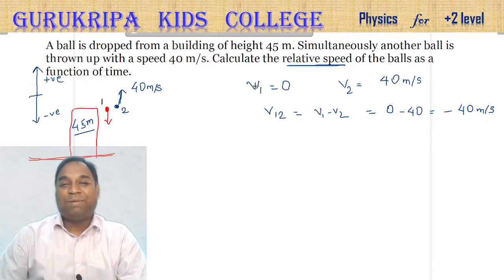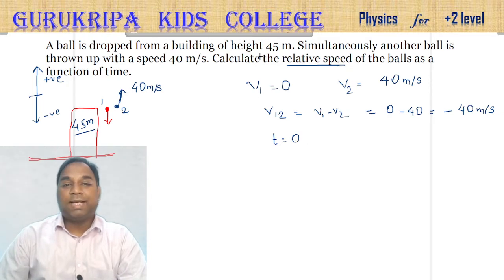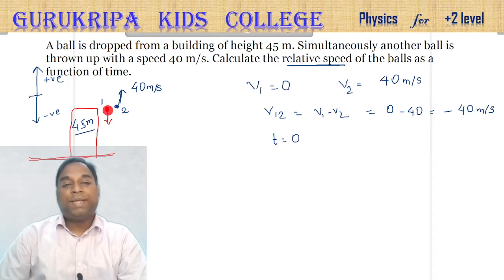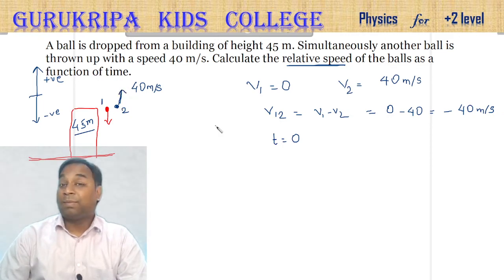This is at time t = 0. As time increases, acceleration due to gravity acts on both balls. The velocity of ball 1 will increase downward and the velocity of ball 2 will decrease. So what happens to the relative velocity?